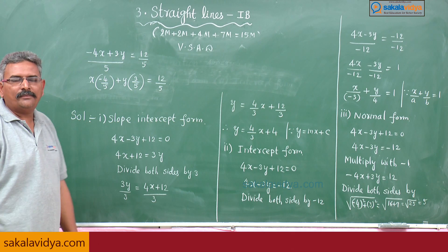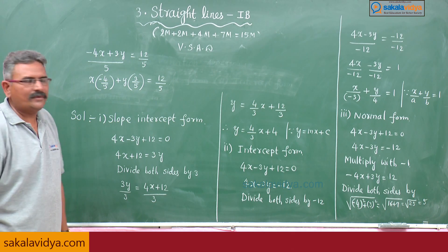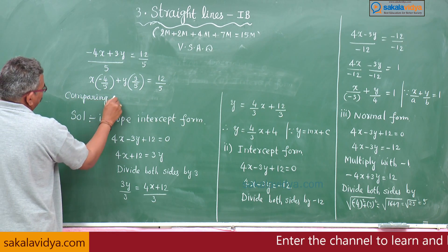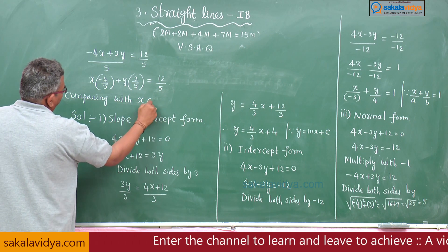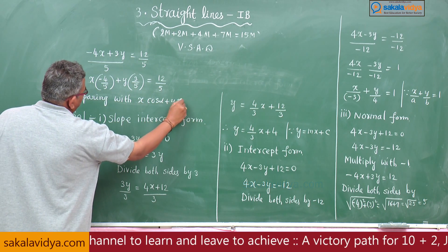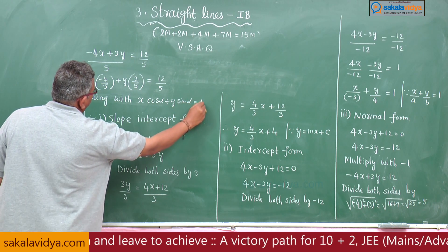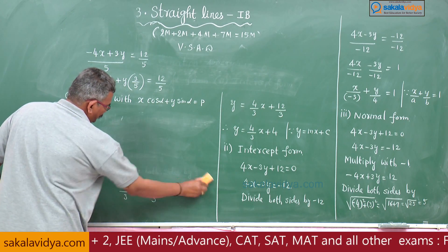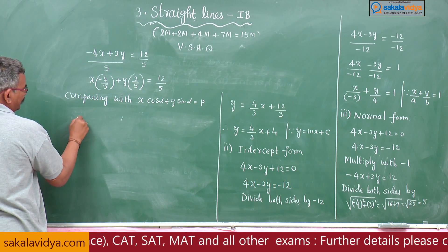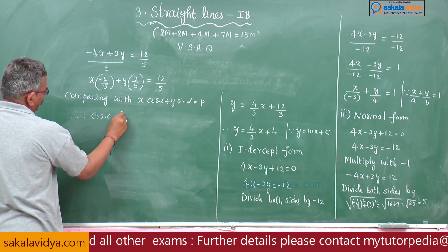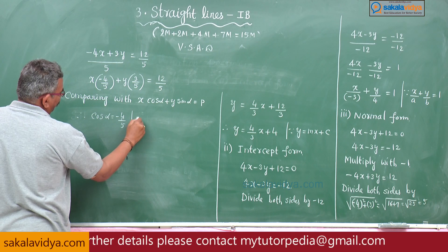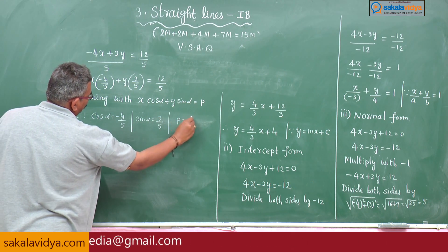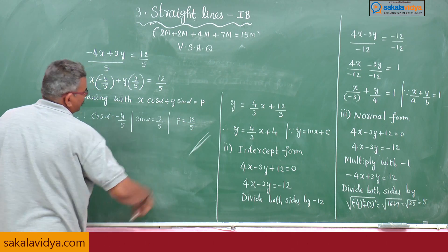This is now in the form x cos alpha plus y sin alpha equals p. Comparing with that form, p is the perpendicular distance and must be positive — that is why we multiplied by minus 1 earlier. Therefore, cos alpha equals minus 4/5, sin alpha equals 3/5, and p equals 12/5.